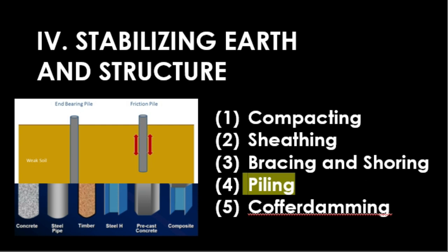Piling involves driving large concrete, steel, or wooden stakes into the ground to give more stability to a structure. The two main purposes of piling are to improve the load-bearing capacity of earth and to help against uneven settlement of the structure. There are two kinds of piles: friction piles, which are supported by friction between the pile surface and soil, and end-bearing piles, which rest on a firm layer of rock or earth below ground.